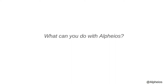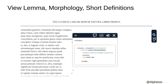What specifically can you do with Elpheus? Activating Elpheus for a page enables word selection. Double-click on a word, and you will get a morphological parse, identification of lemmas, and a short definition. From here, deeper word study can be performed using the icons at the top of the pop-up.